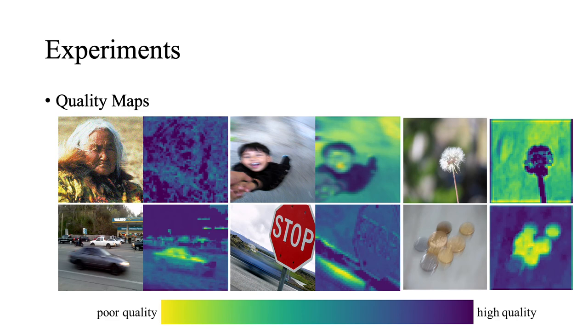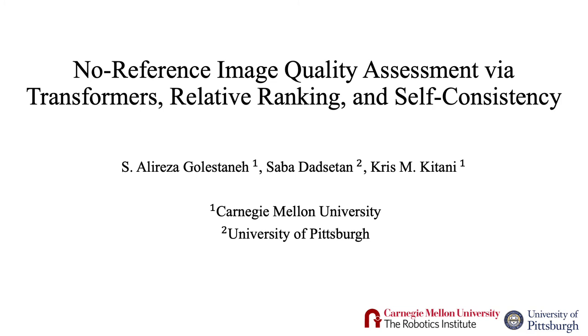We can also see some of the quality maps generated from our proposed model, where the bright areas represent the poor-quality regions and the dark areas represent the high-quality regions. Please check out our paper for more details and results.